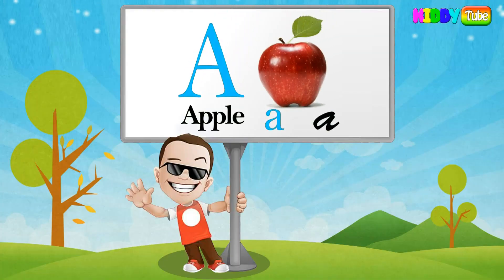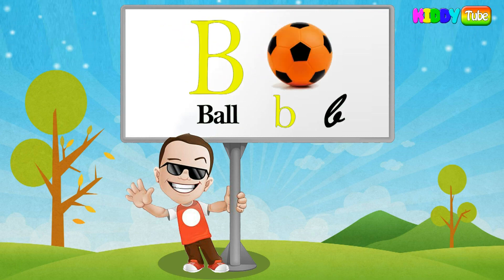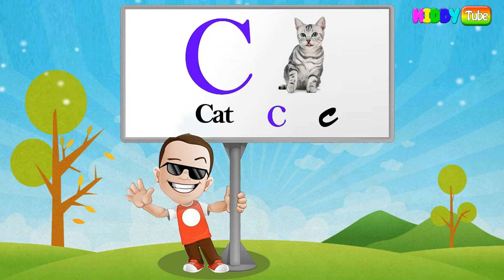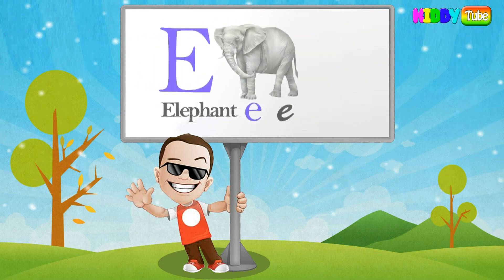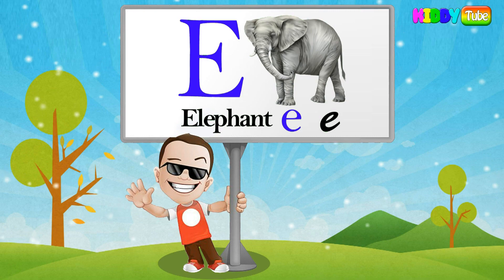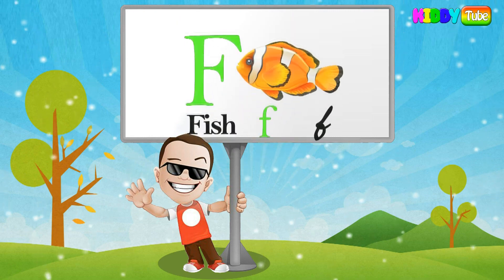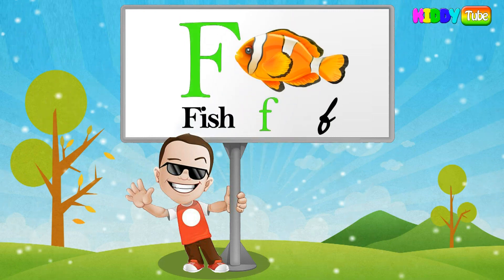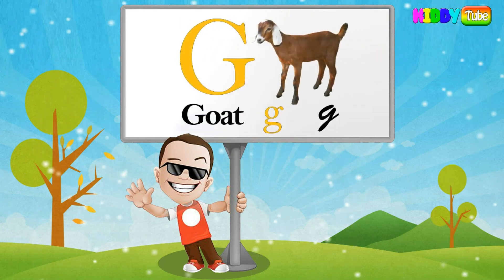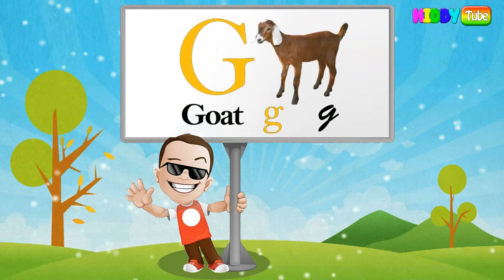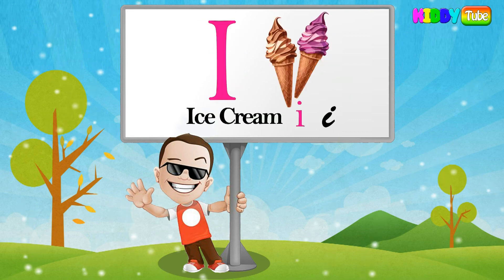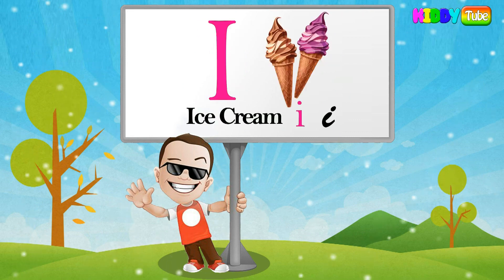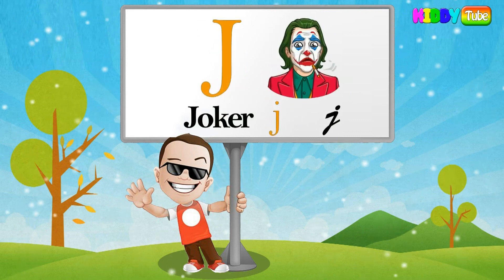A for apple, B for ball, C for cat, D for dog, E for elephant, F for fish, G for goat, H for horse, I for ice cream, J for joker.